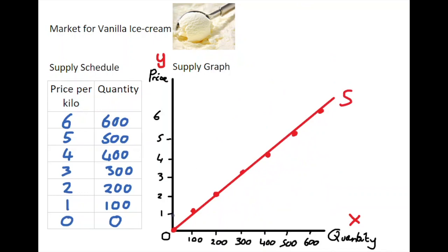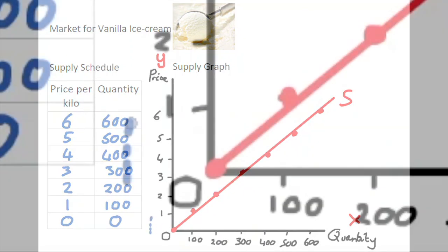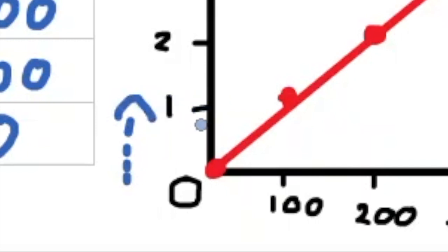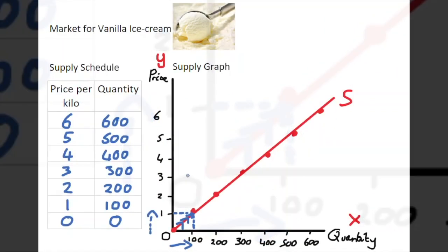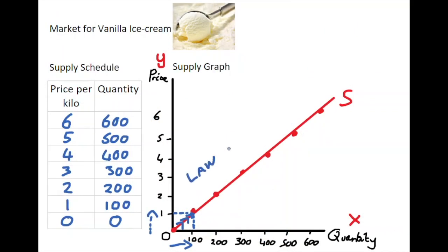So what that means is as the price in the market increases, let's say from zero up to one euro, so an increase in price along the supply curve, what happens is the quantity increases as well. So as price goes up, quantity supplied goes up, and this is called the law of supply.